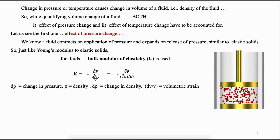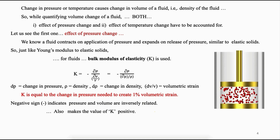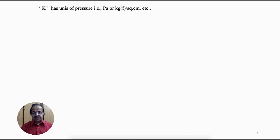Bulk modulus is denoted by K = −(∂p)/(∂v/v), where ∂p is the change in pressure and ∂v/v is the volumetric strain. It is also expressed in terms of density as −(∂p)/(∂ρ/ρ). K equals the change in pressure needed to create one percent volumetric strain. The negative sign indicates that pressure and volume are inversely related, and also makes K positive. Compressibility of a fluid is the reciprocal of bulk modulus. K has units of pressure; its dimension is F/L² or M¹L⁻¹T⁻².